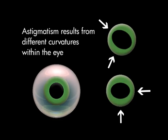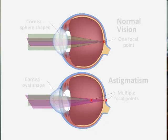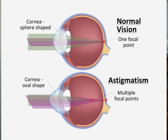Now, it doesn't have to be in the horizontal and vertical — it can be anywhere along the clock face where the curvature is different. Those two curvatures cause two points of focus in the back of the eye, and the eye is not able to correct for those two blurred circles.